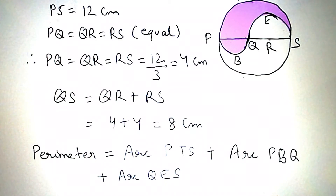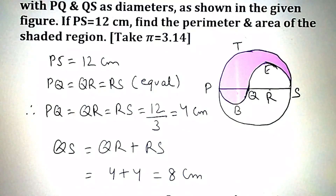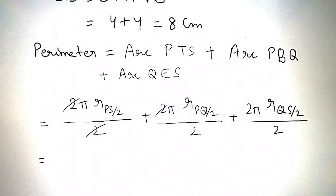The circumference of semicircle PBQ will be 2πR by 2, and since PQ is a diameter, its radius will be PQ by 2. QES is a semicircle and the circumference of the semicircle is 2πR by 2, and QS is a diameter, therefore its radius will be QS by 2.